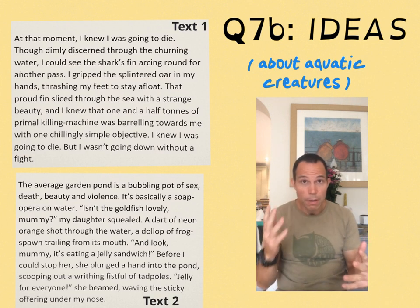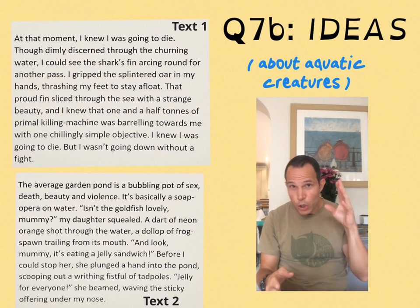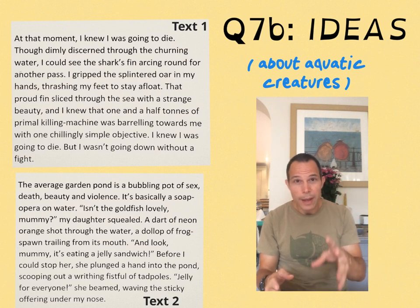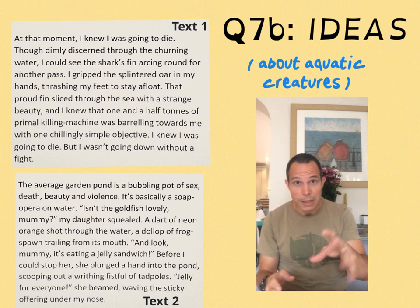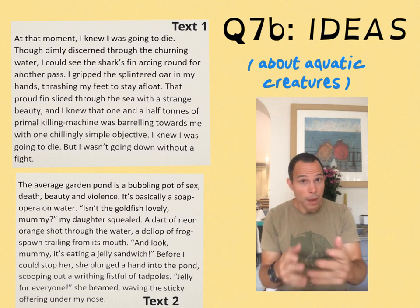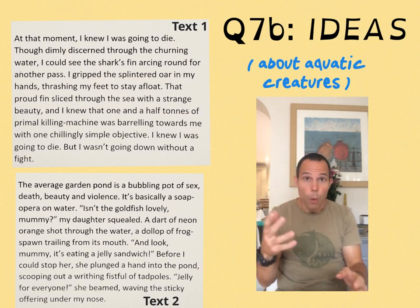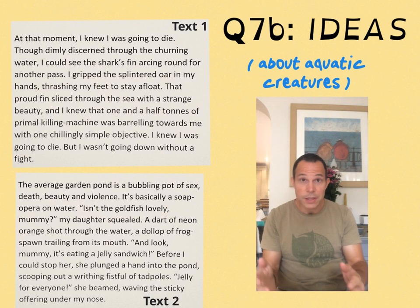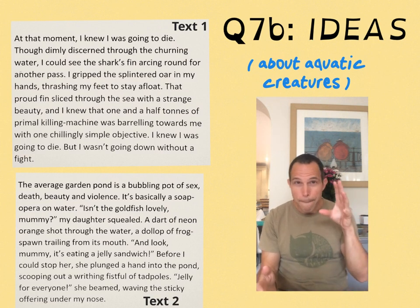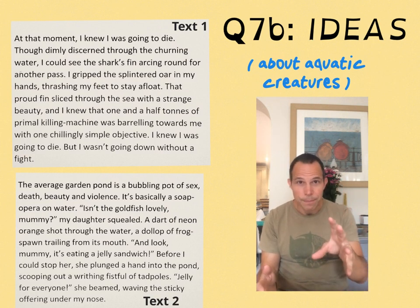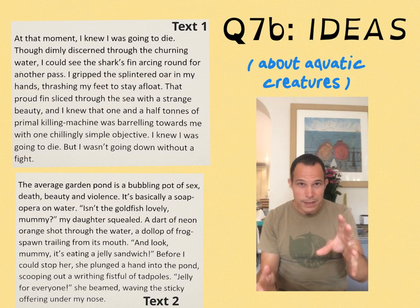I'm about to identify about three ideas that connect these two texts, but before I do, maybe you want to freeze the screen and see if you yourself can discern references and concepts that work here. When it comes to the depiction of aquatic creatures, what similarities, what differences manifest themselves?